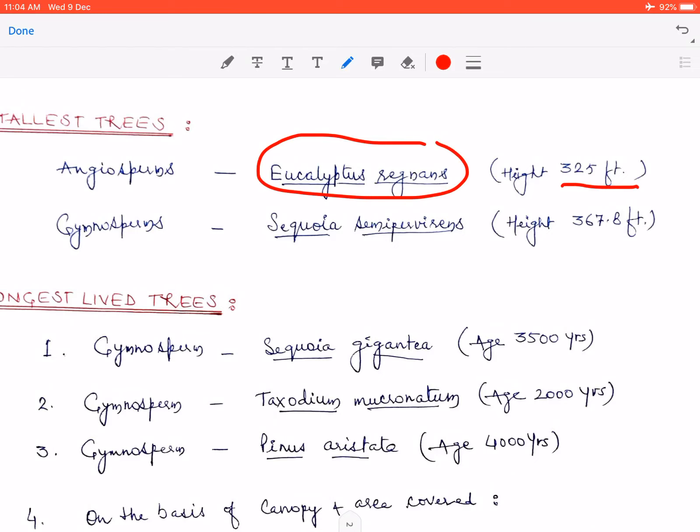Aur dusra jo gymnosperm hai woh hai Sequoia sempervirens, jise German Chairman tree kaha jata hai. Iski height hai 367.8 feet. Toh aap yahan jab compare karein angiosperm toh gymnosperm jo hai, yani Sequoia sempervirens, it is taller than Eucalyptus regnans.